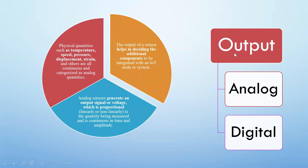Based on output signals, sensors are classified as analog and digital. An analog sensor generates an output signal or voltage that is proportional to the quantity being measured. As the measured quantity increases, the sensor value increases proportionally. The output helps decide additional components needed to produce analog signals. Examples of analog quantities include temperature, speed, pressure, displacement, and strain — all continuous quantities.